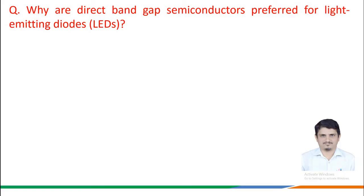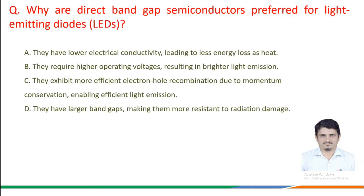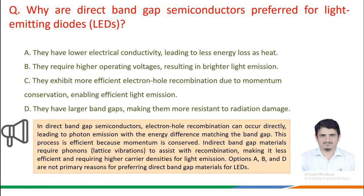Why are direct band gap semiconductors preferred for light emitting diodes? In direct band gap semiconductors, electron-hole recombination can occur directly, leading to photon emission with the energy difference matching the band gap.